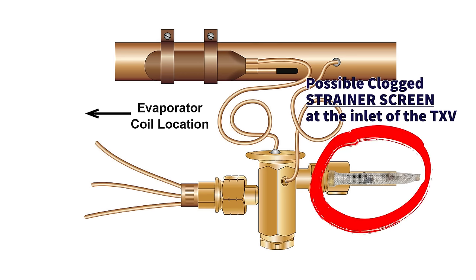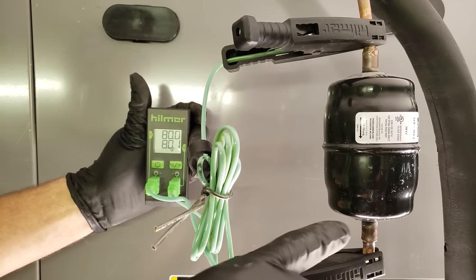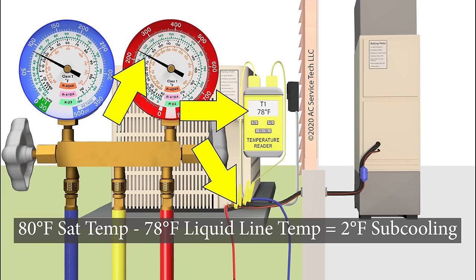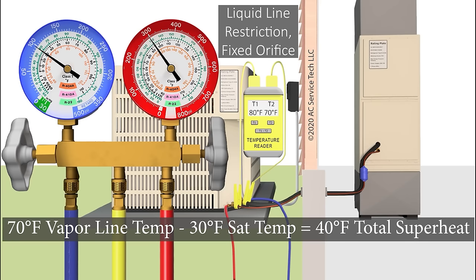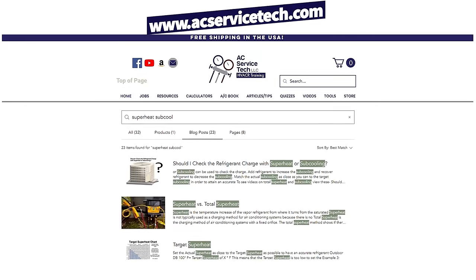You could have a clogged strainer screen at the inlet of the TXV, or a liquid line restriction at your filter dryer — which could be broken inside, or the pre-filter could be clogging the refrigerant from traveling through, causing a pressure drop before it even reaches the thermostatic expansion valve. You can refer to quick reference cards to determine the difference: a low refrigerant charge shows high superheat and low subcooling, while a liquid line restriction shows high superheat and normal to high subcooling.